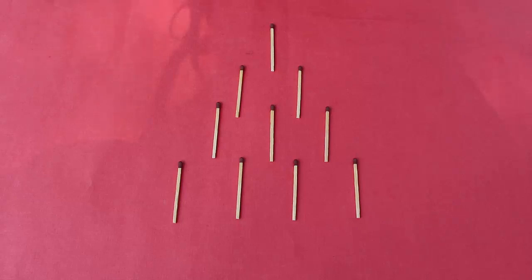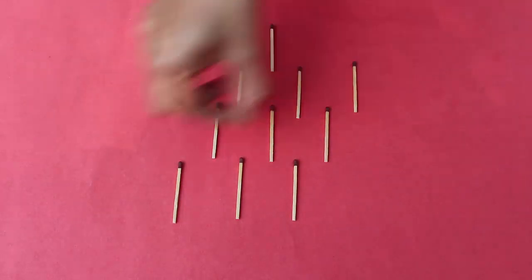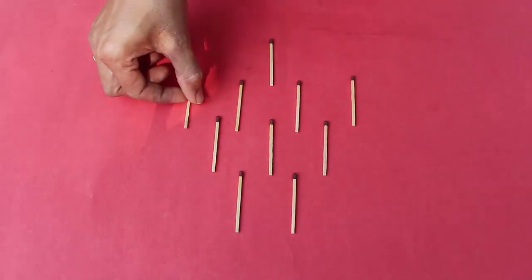Now here is a triangular arrangement of ten matchsticks with the tip of the triangle at the top. By shifting just three matchsticks can the tip of the triangle come down.